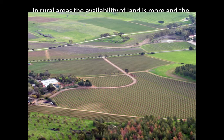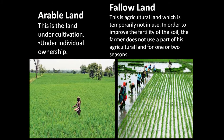Land use in rural areas can be classified as follows. First is arable land — this is the land under cultivation and is under individual ownership. Next is fallow land — this is agricultural land which is temporarily not in use. In order to improve the fertility of the soil, the farmer does not use a part of his agricultural land for one or two seasons, and does not grow any crops in that land to regain the soil's fertility.